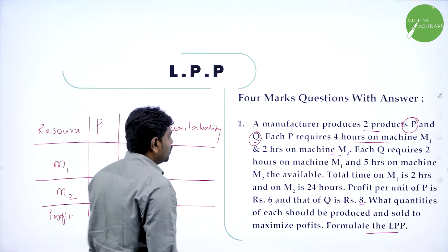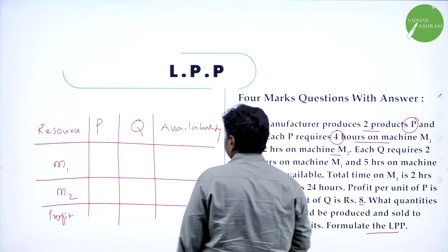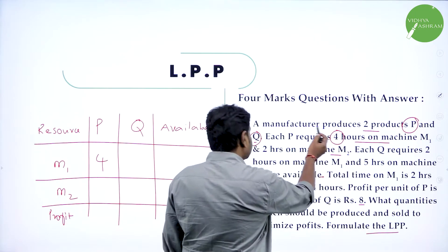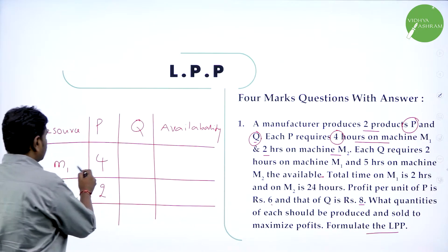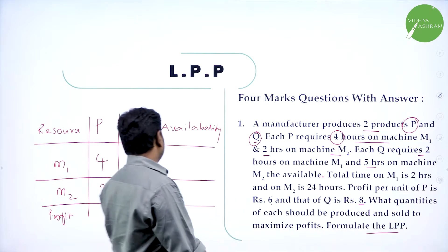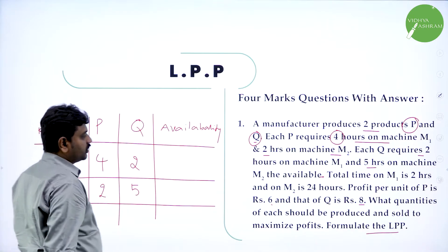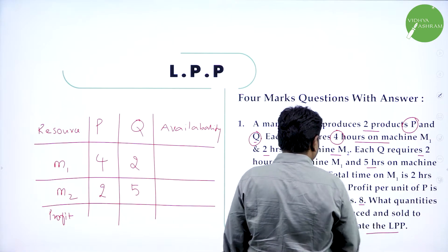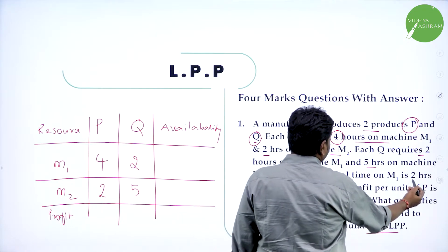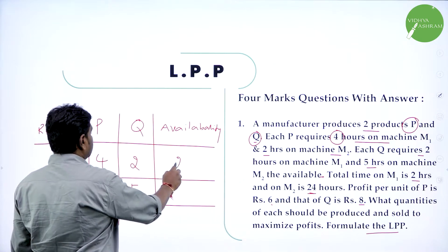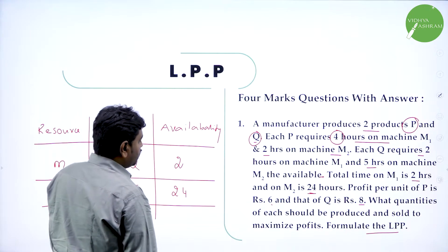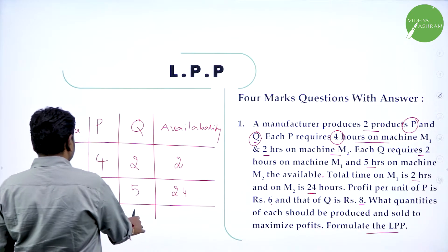For any manufacturing problem you can make a table like this, then formulating becomes easy. P requires four hours on machine M1 and two hours on machine M2. Q requires two hours on machine M1 and five hours on machine M2. Total availability for M1 is 20 hours and for M2 is 24 hours. Profit for P is 6 rupees and profit for Q is 8 rupees. This is what is given.